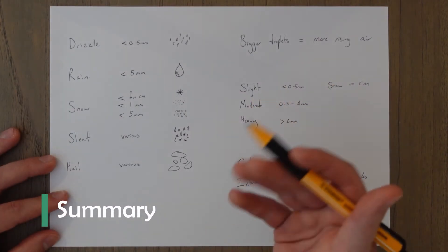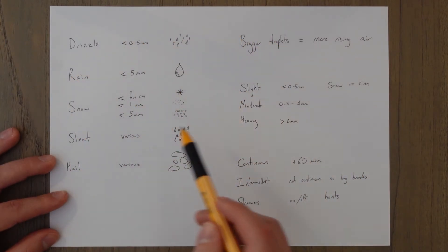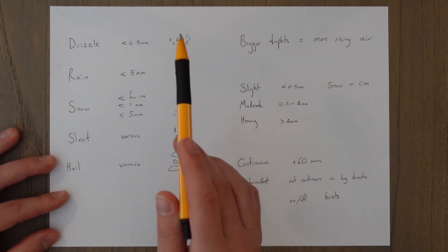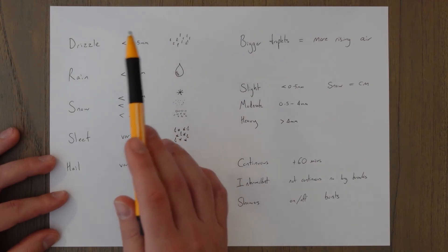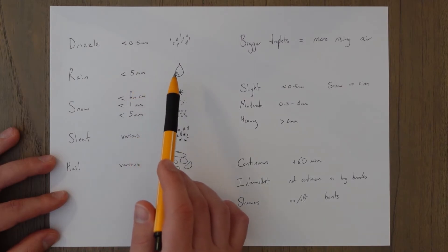To summarize then, a nice quick class today short and sharp. You've got different types of precipitation. Drizzle is water that is less than 0.5 millimeters in diameter. Rain is water that is less than 5 millimeters in diameter.